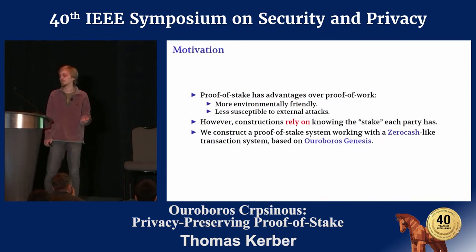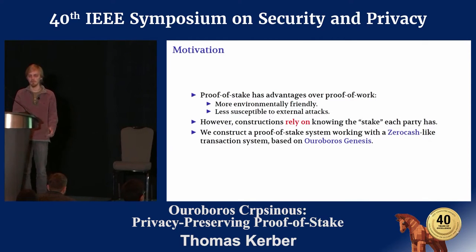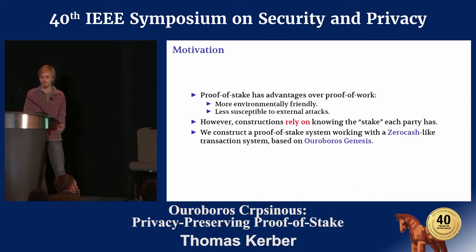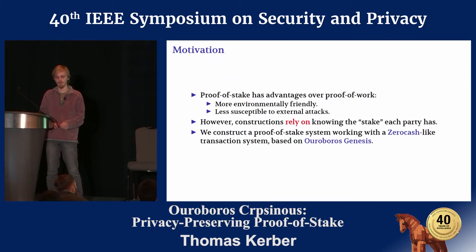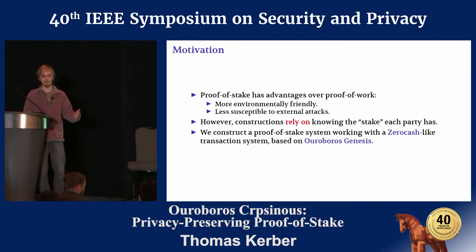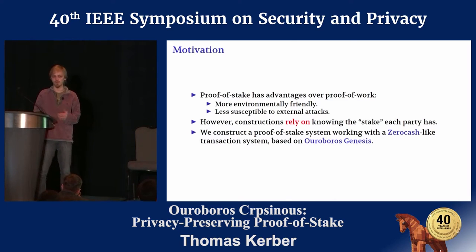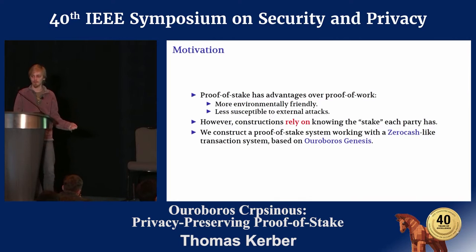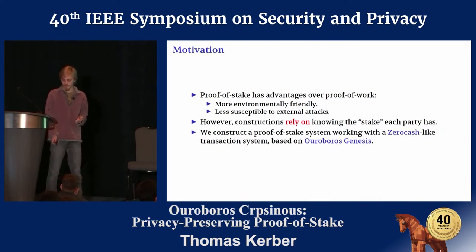Proof-of-stake is advantageous over proof-of-work for multiple reasons. In particular, it consumes a lot less energy and is much more environmentally friendly, simply by virtue of not requiring a huge amount of work to be done. It is also less susceptible to external attacks — there have been instances where proof-of-work currencies were attacked by mining pools from larger currencies using the same algorithm. This is more difficult in a proof-of-stake setting because instead of just buying computation power wholesale, you have to actually convince participants in the protocol.